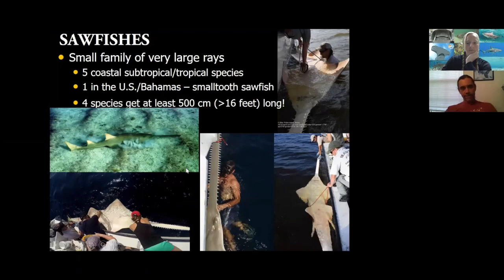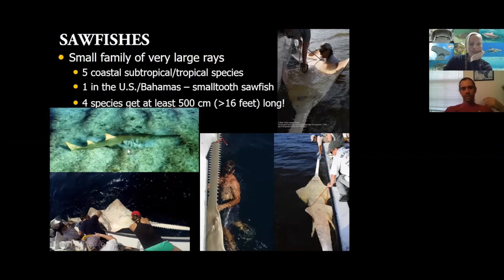What about sawfishes? Sawfishes are a small family of very large rays. Superficially they look more like a shark, with two big dorsal fins and a tail, not extremely flat like a stingray. But there are only five species in the world living — one in the US and Bahamas, the small-toothed sawfish, which we're focusing on today. Four of the five species get 16 feet long or bigger, and even the smallest — the dwarf sawfish — still gets 10 feet long.